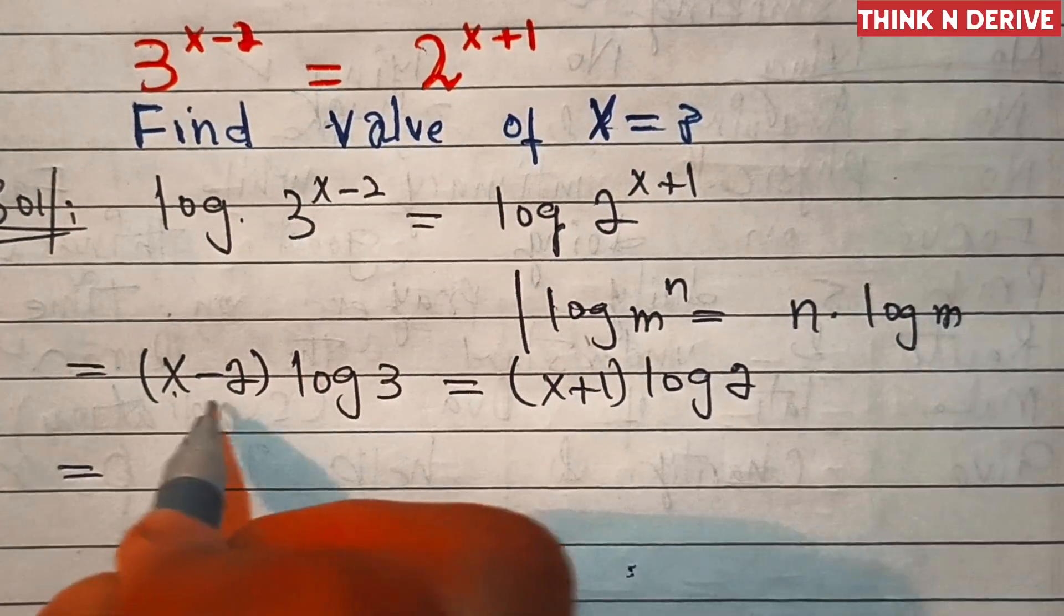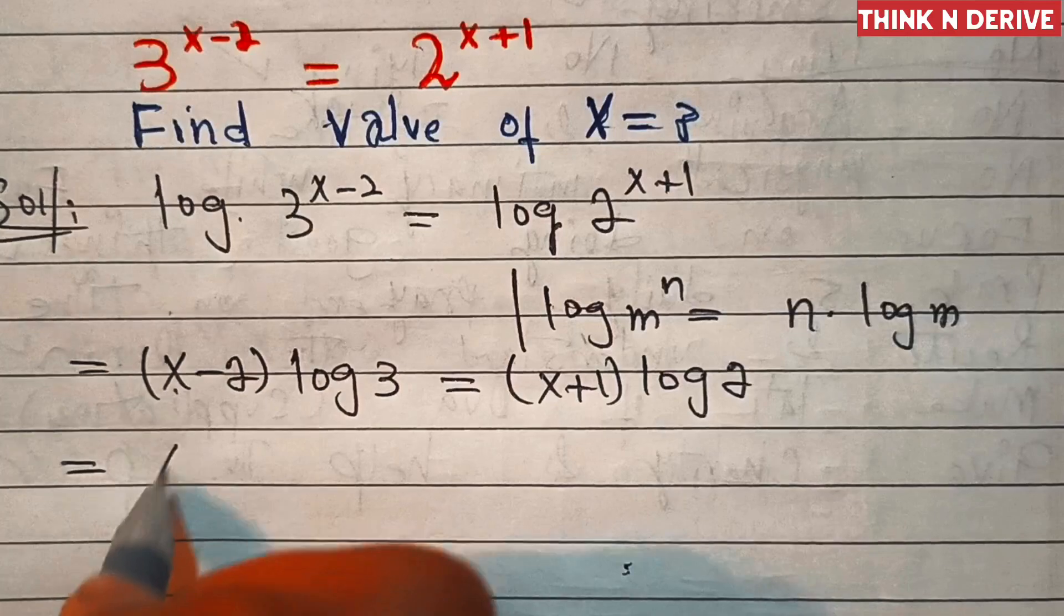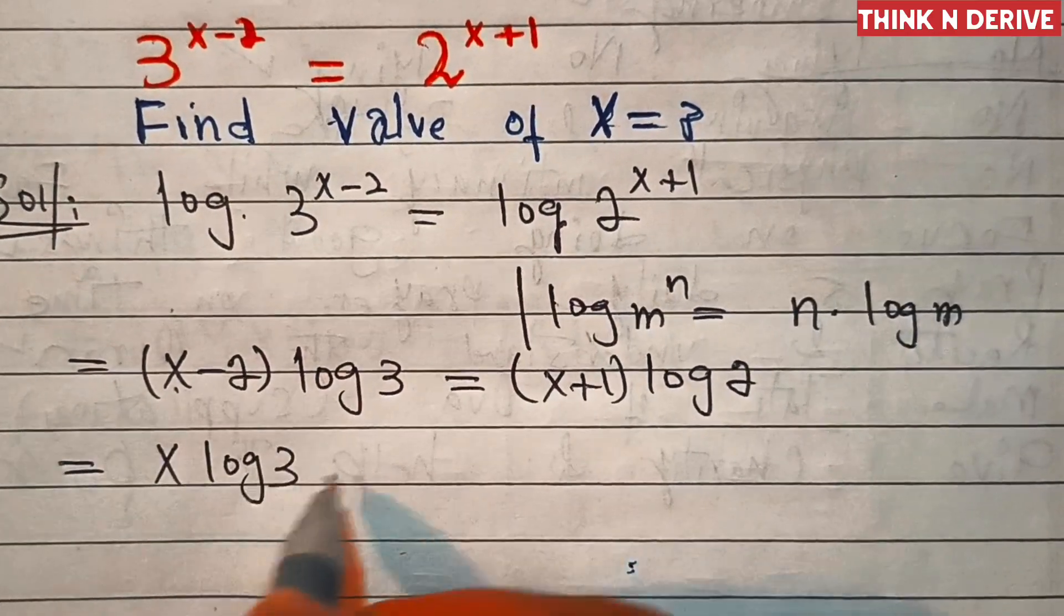Which is equal to, now multiply x minus 2 by log 3, so this is x log 3 minus 2 log 3.